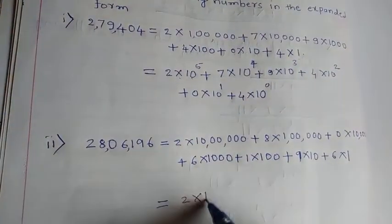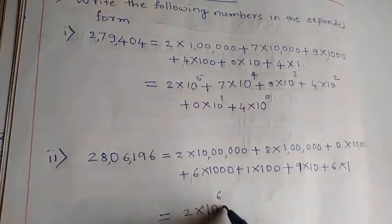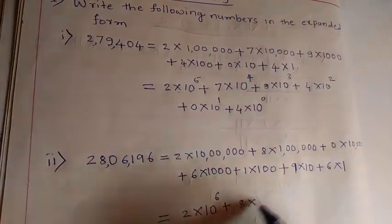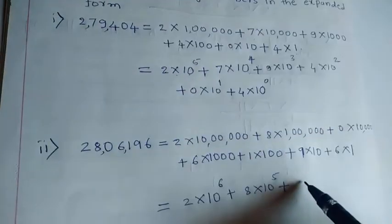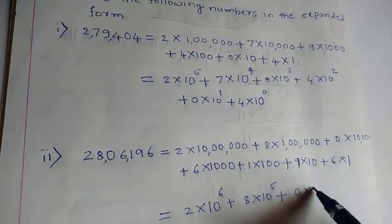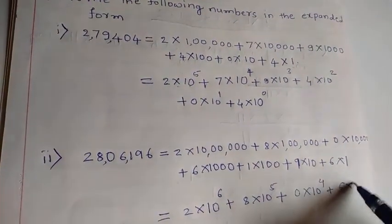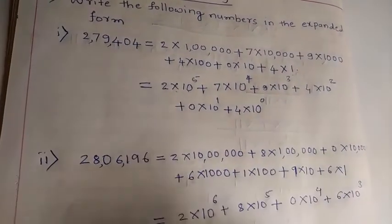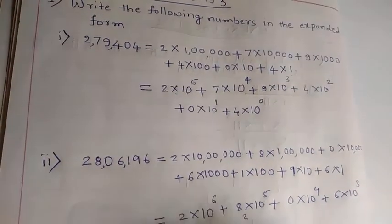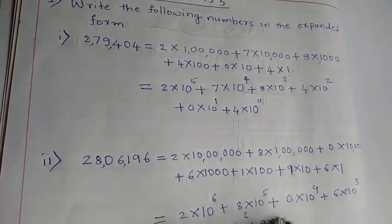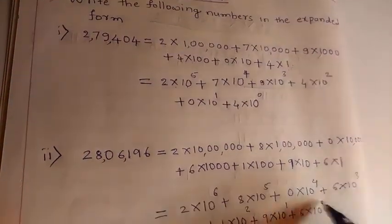Now the exponent step: two into ten — how many zeros? Six — so two into ten raised to six. Plus eight into ten raised to five. Plus zero into ten raised to four. Plus six into ten raised to three. Plus one into ten raised to two. Plus nine into ten raised to one. Plus six into ten raised to zero.